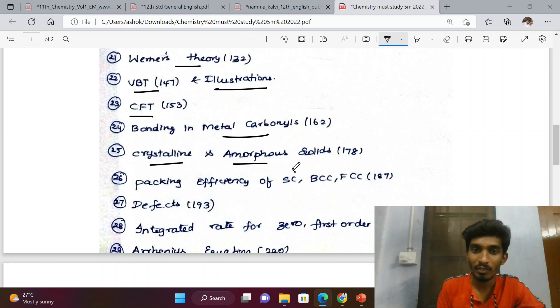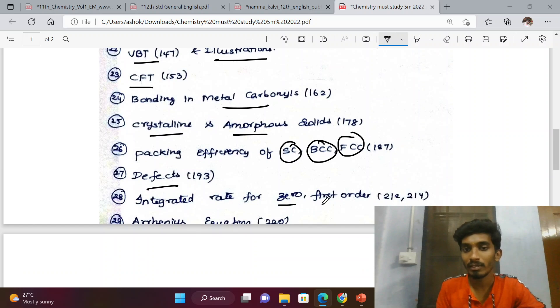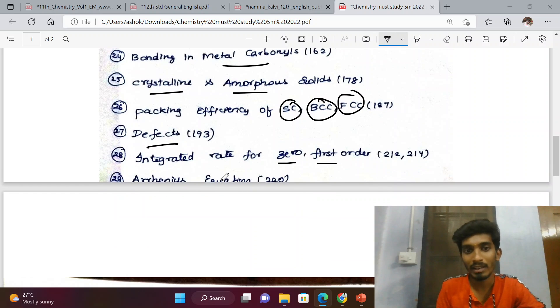Packing efficiency of simple cubic, body centered cubic, face centered cubic. Defects - Schottky defect, Frenkel, metal excess, metal deficiency. Integrated rate law for zero order and first order reaction, Arrhenius equation.